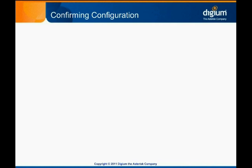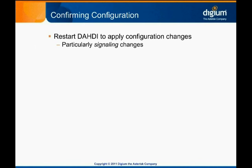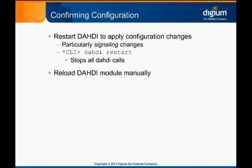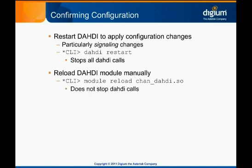ChanDottie is not as flexible as some other Asterisk modules when it comes to applying new configuration. Usually you'll need to restart Dottie instead of just reloading it to apply configuration changes, particularly if you've changed the signaling for any channels. Restarting Dottie can be done on the Asterisk CLI using the command Dottie Restart, but be aware that this command will stop all calls using a Dottie channel, so think twice before doing this on a live system. If the changes don't impact the signaling, you can try manually reloading the ChanDottie module via the command module reload chan_dotty.so. This will attempt to apply the configuration changes without destroying active calls.